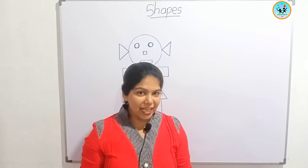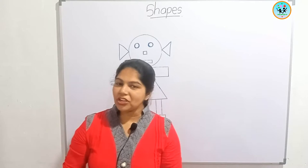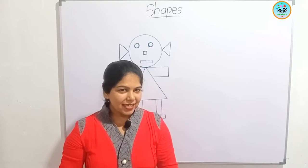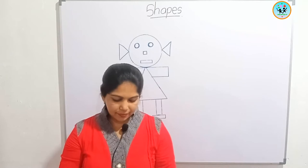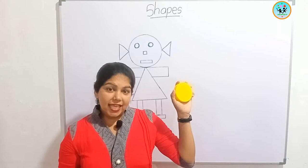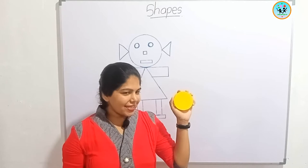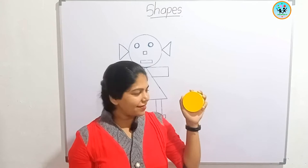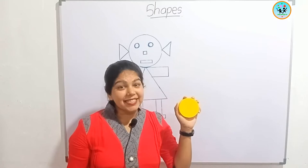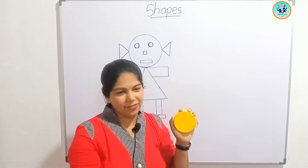Now you know shapes. I will show some examples — I hope you will give the answers. This is a lid of a bottle. Can you tell me what is the shape of this lid? It's a circle. Very good.